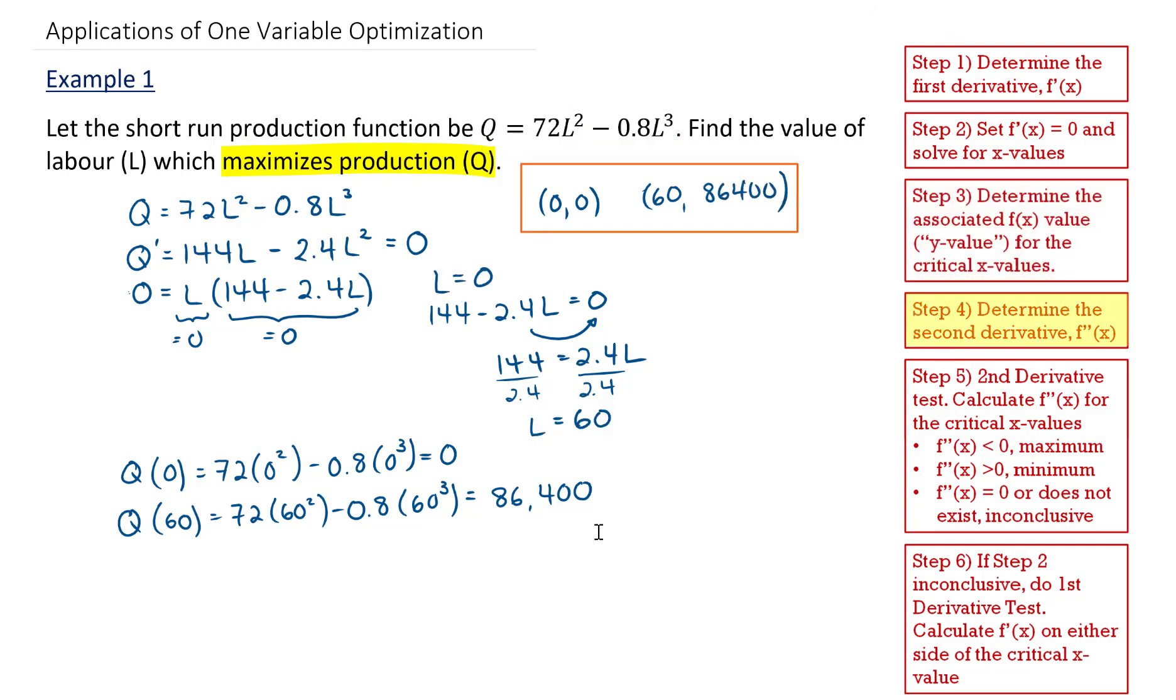Now I'm going to determine if these coordinates are maximums or minimums based on the second derivative test. So to start, I get the second derivative Q double prime. And that is going to be equal to the derivative of my first derivative up here. So the derivative of 144L is 144, and the derivative of 2.4L squared becomes 4.8L.